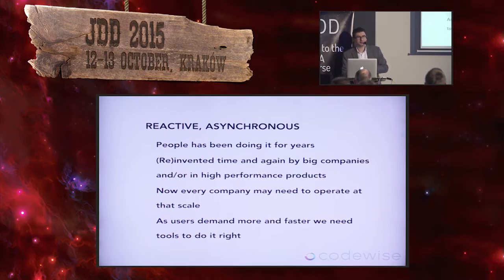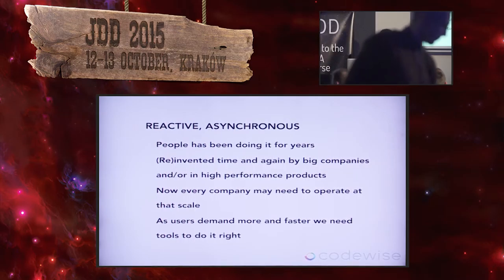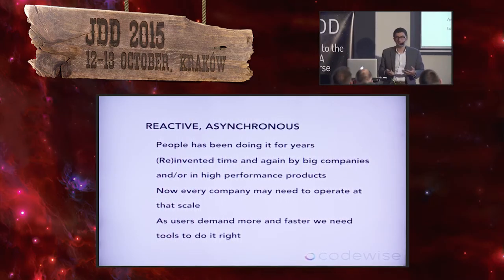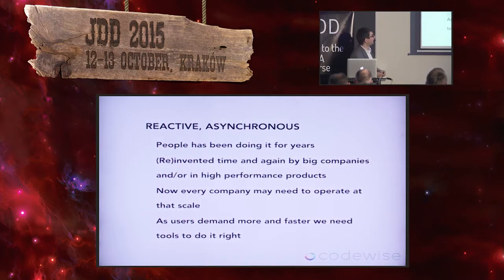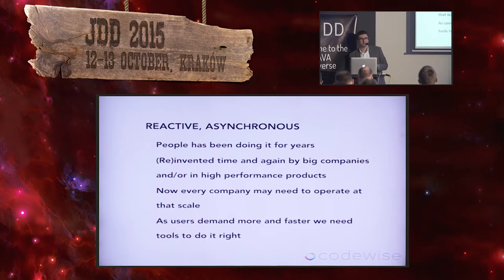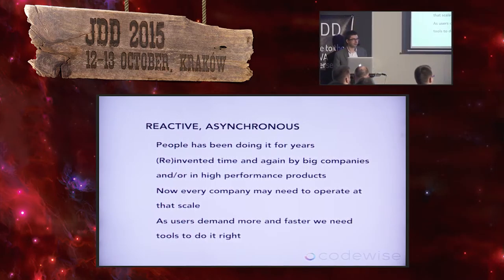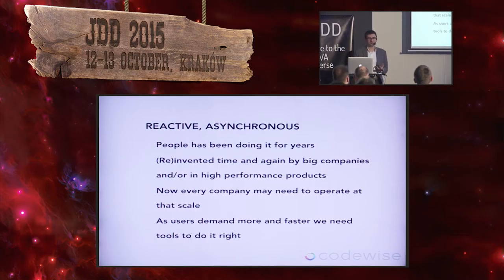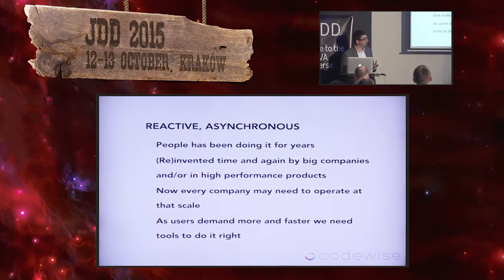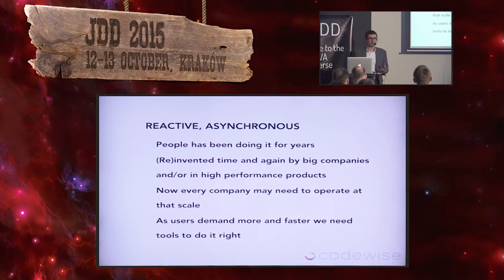There are two routes here. One comes from people that have been in the business for a long time. As the scale of the problems we all have to deal with grows, they found they have to rework how they approach solving problems like high-throughput data processing or low-latency processing. They continuously stumbled upon the same problems and similar solutions. So they said, let's create a manifesto and show people that this is how we do it.